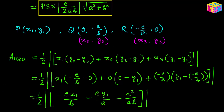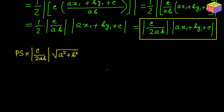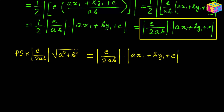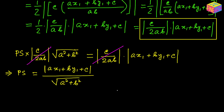Now let's equate both expressions for the area. We found area equals PS times modulus of C over 2AB times the square root of A² plus B² from the first method, and area equals modulus of C over 2AB times modulus of Ax₁ plus By₁ plus C from the second method. The factor modulus of C over 2AB cancels from both sides, giving us PS equals modulus of Ax₁ plus By₁ plus C over the square root of A² plus B². That is our answer — the distance of point P from the straight line.